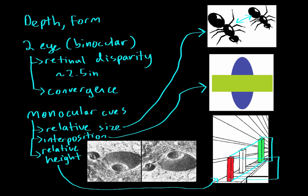One more monocular cue is shading and contour. We can use light and shadows to get an idea of the form of an object. For example, two images that are actually the same — just one flipped upside down — look completely different. One looks like a crater while the other looks like a volcano or mountain. Based on light and shadows, you can infer whether a shape is recessed or protruding from a surface. Those are the monocular cues for form.